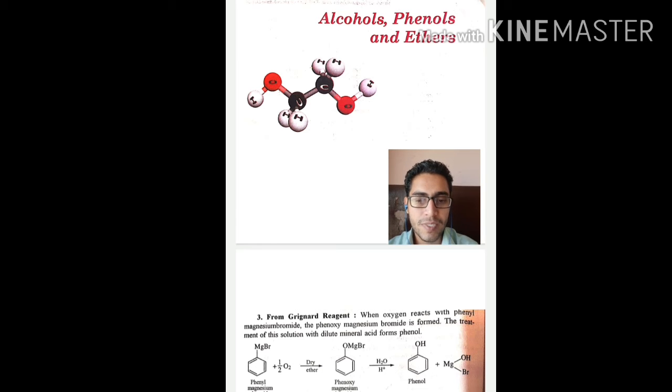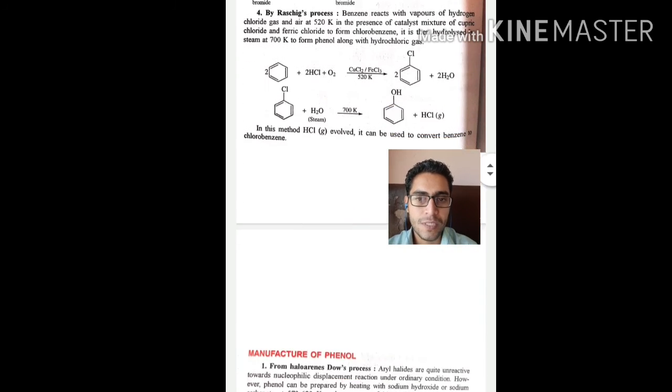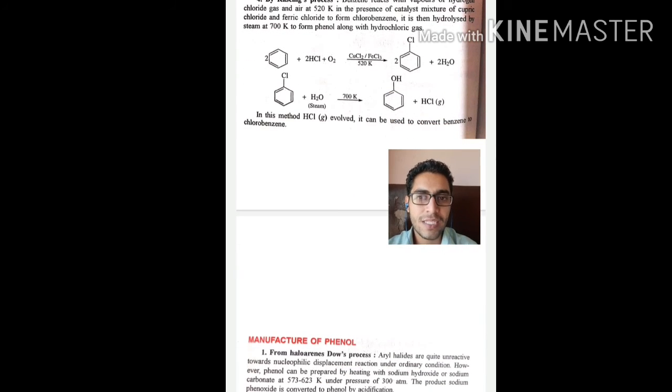...we have phenyl magnesium bromide plus half oxygen in dry ether process giving phenoxymagnesium bromide, which in water process will undergo hydrolysis and form phenol plus magnesium hydroxy bromide.